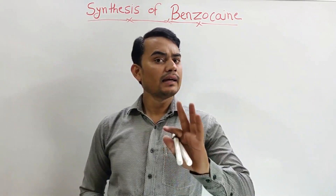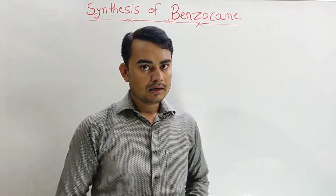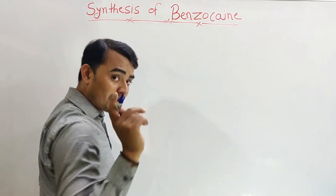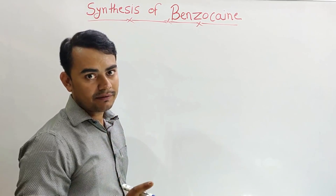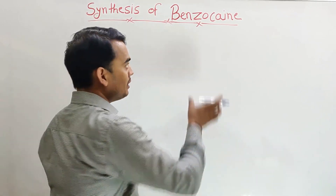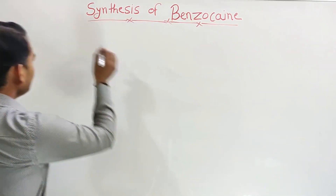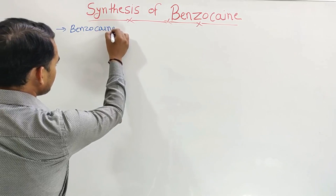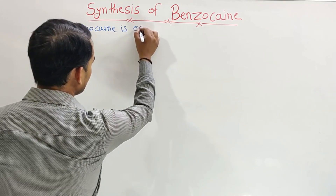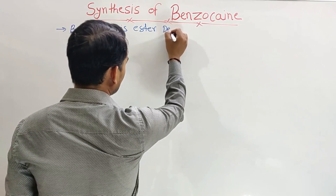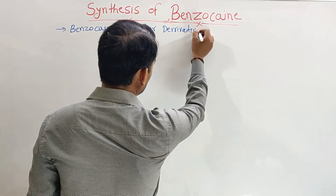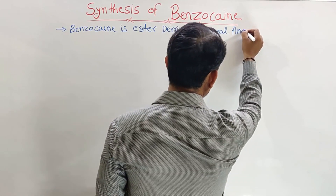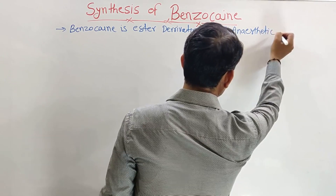Benzocaine is mainly an ester derivative and a local anesthetic. Here is a simple trick: in the name benzocaine, there is only one 'i', so it is an ester derivative. If there were two 'i's, it would be an amide derivative. Here we have the ester derivative — a local anesthetic.